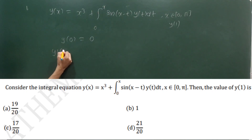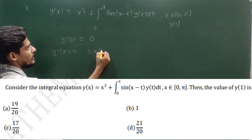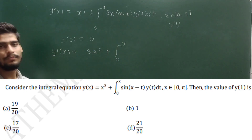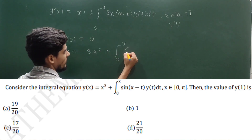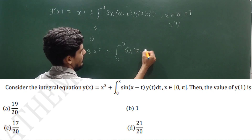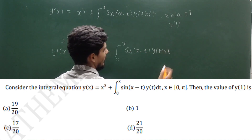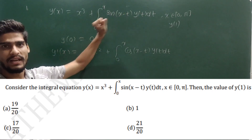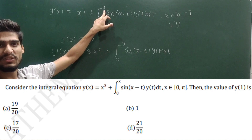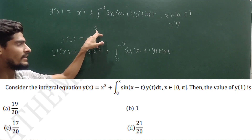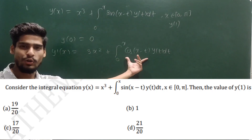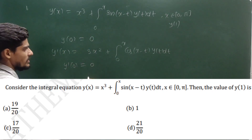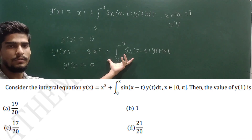Differentiate and use the Newton-Leibniz formula. It gives y'(x) = 3x² + ∫₀ˣ cos(x − t) · y(t) dt. When you take the upper limit term, sin(x − x) = sin(0) = 0, and the differentiation of the lower limit gives zero. So only the integral term with cos(x − t) remains. Now y'(0) = 0 because the integral from zero to zero is zero and the 3x² term is also zero at x = 0.